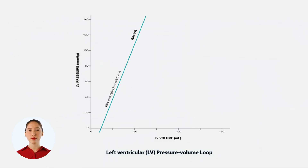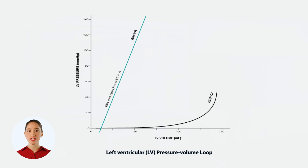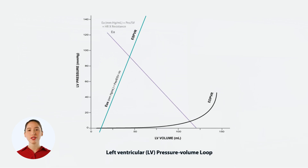This line represents the maximum pressure that the ventricle can develop at any given volume. Next, we'll draw the end-diastolic pressure volume relationship, or EDPVR line, which shows the pressure volume relationship when the ventricle is filled and relaxed. Now, we'll add the arterial elastance line, which we'll draw in purple. Arterial elastance is calculated as the end-systolic pressure over stroke volume, represented as a straight line from the end-systolic point down to the volume axis.